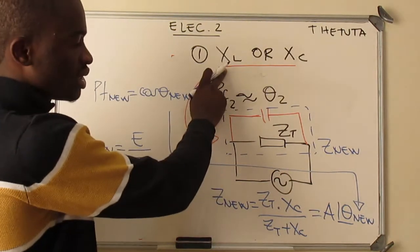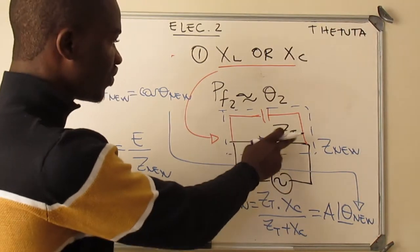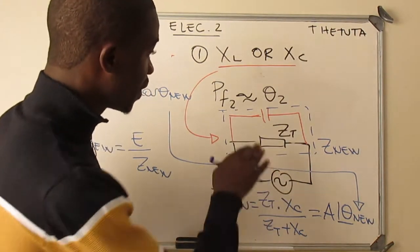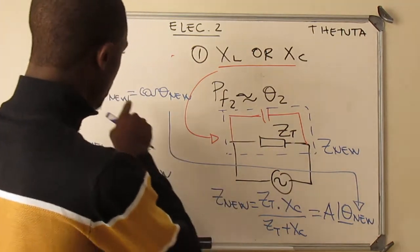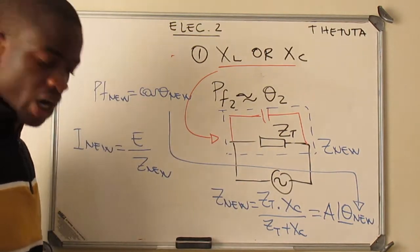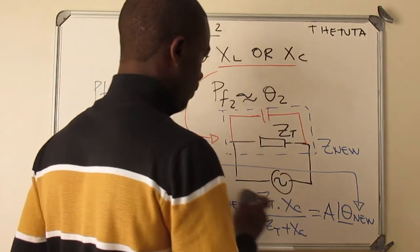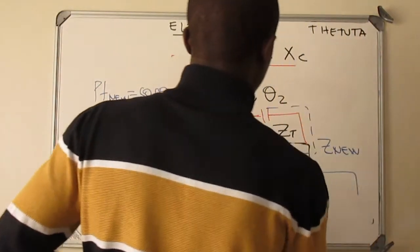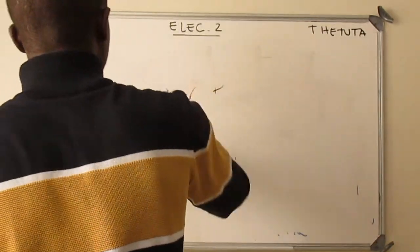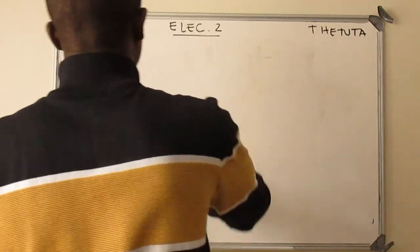To summarize Case 1: the component connected in parallel is given, so you calculate Z_new, then extract the new power factor angle and new current in the circuit. The second case is where they give you the new power factor but you have to calculate the unknown component.